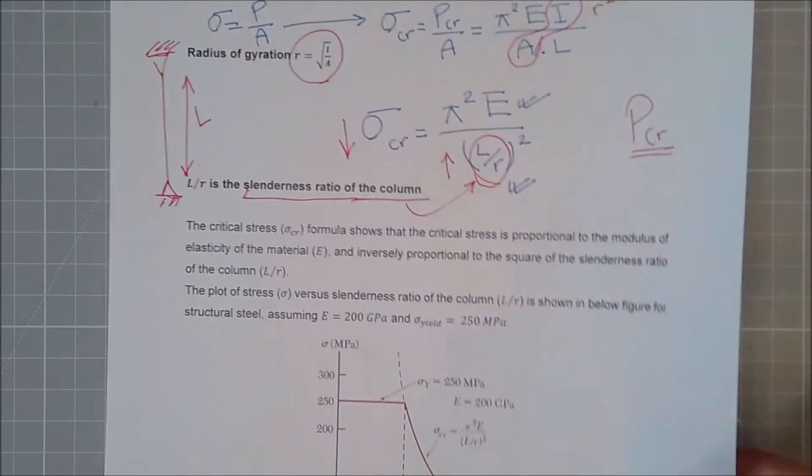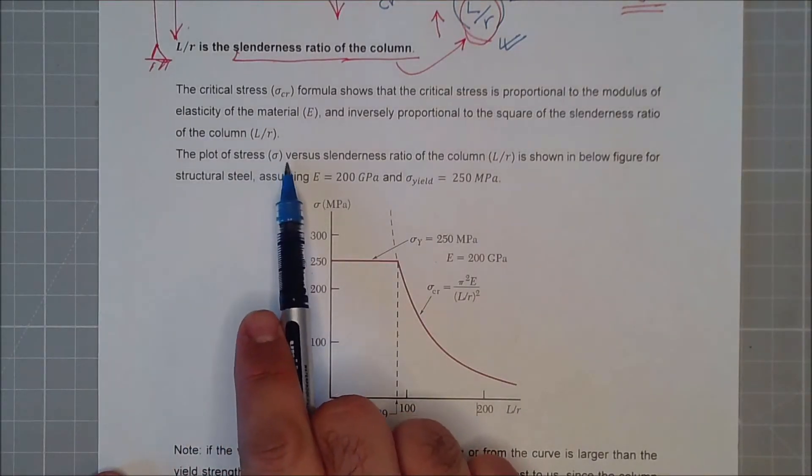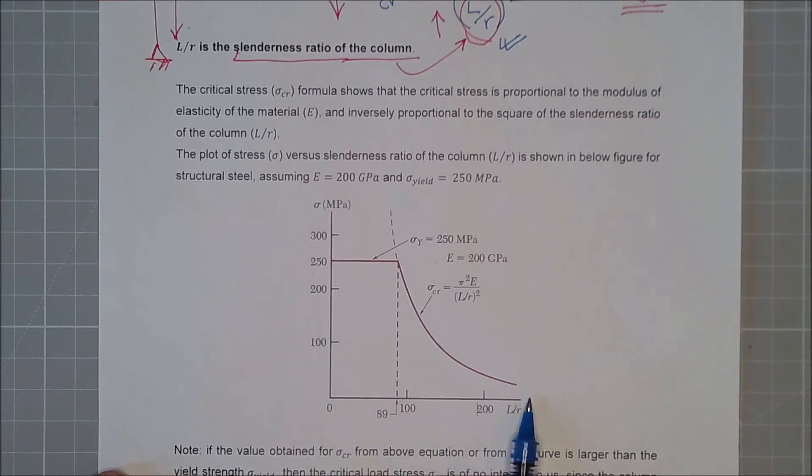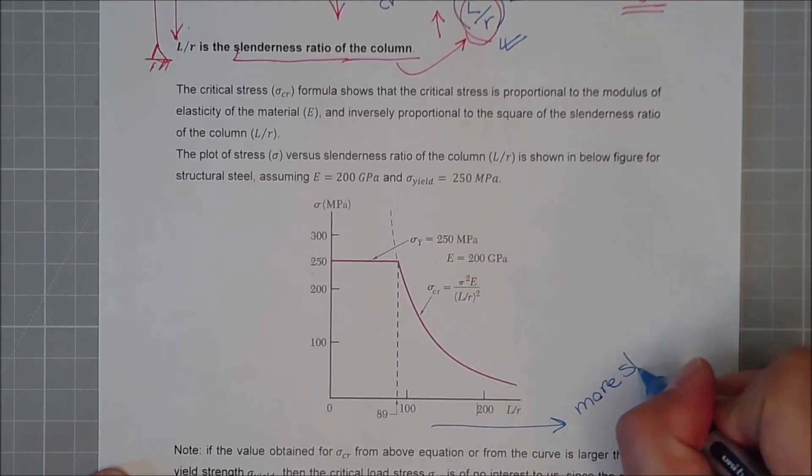Now, if I plot this, the plot of stress versus slenderness ratio. So as we go to this side, we have more slender columns.